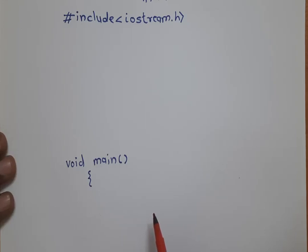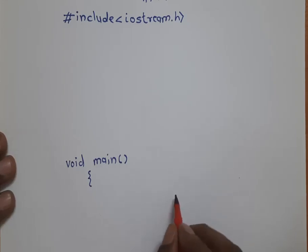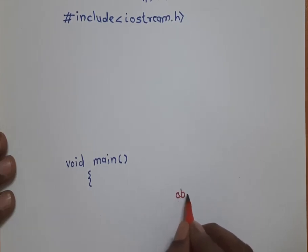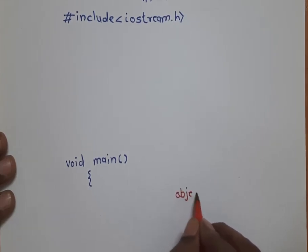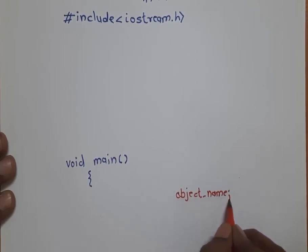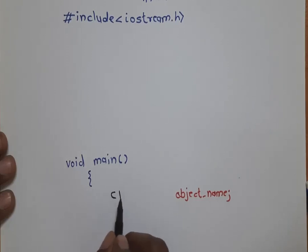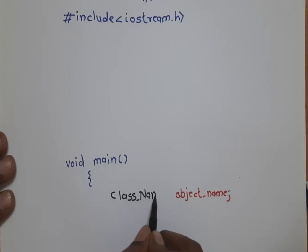C++ is called an object oriented programming system because in the main program everything we write with the help of objects. So instead of declaring variables, we declare objects, and these objects we create from a class.